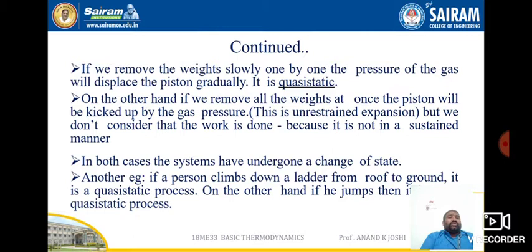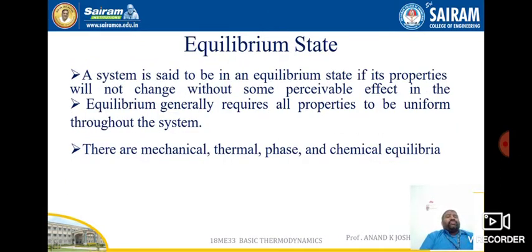On the other hand, if a person jumps from the roof to the ground, we cannot say it is a quasi-static process. This is how we understand the quasi-static process. In both cases, the system has undergone a change of state. An equilibrium state means the system's properties will not change without some perceivable effect.